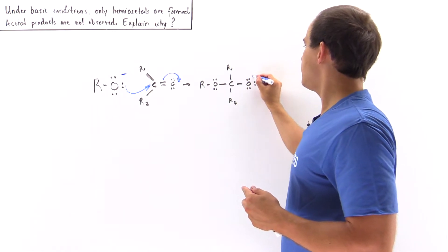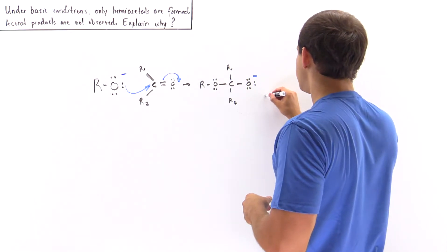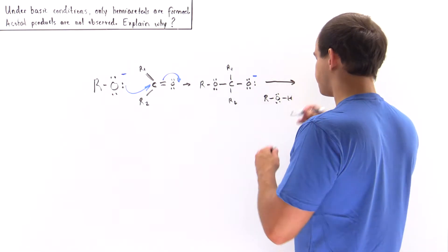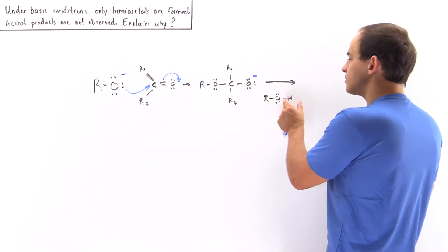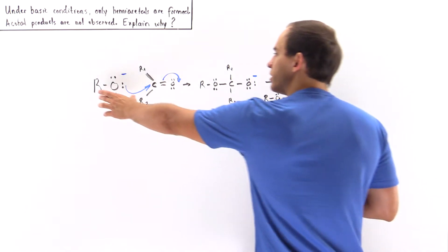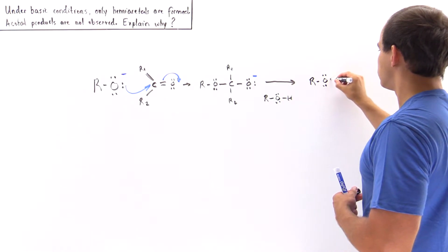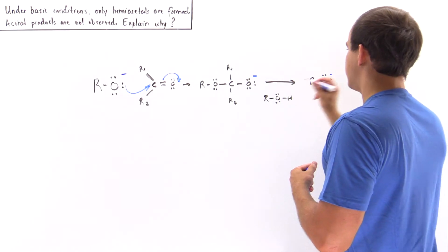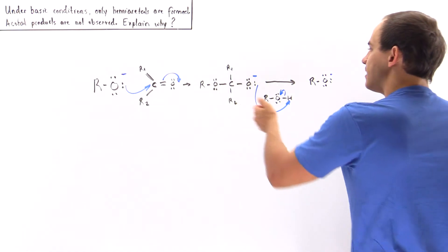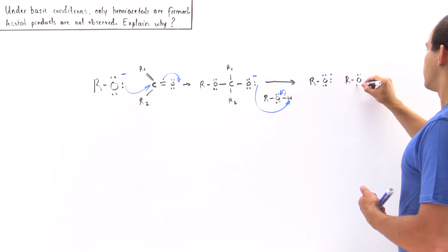So we have our alkoxide group that is now attached to this carbon via this oxygen-carbon bond. We have the group R1, the group R2, and we also have this oxygen which now bears our negative charge. Now in the final step of the hemiacetal formation, this oxygen reacts with an alcohol molecule that is present inside our solution, and this oxygen grabs this H, reforming the base that we began with, our alkoxide.